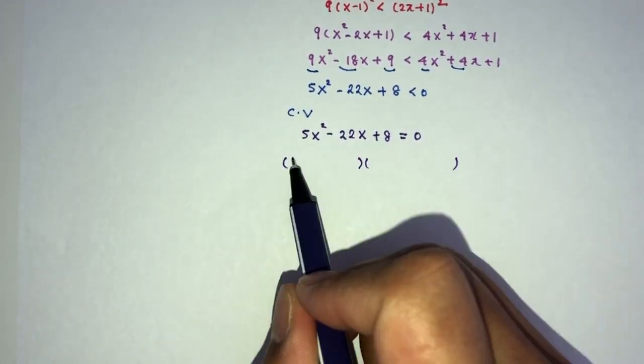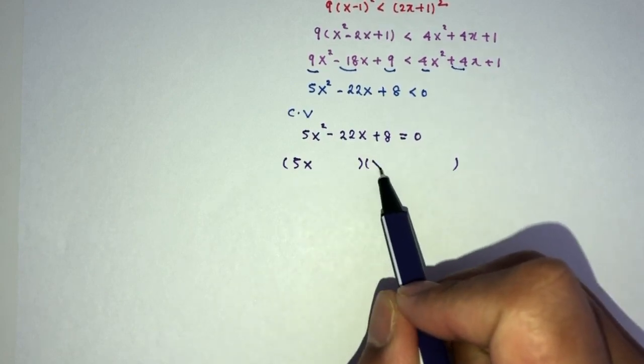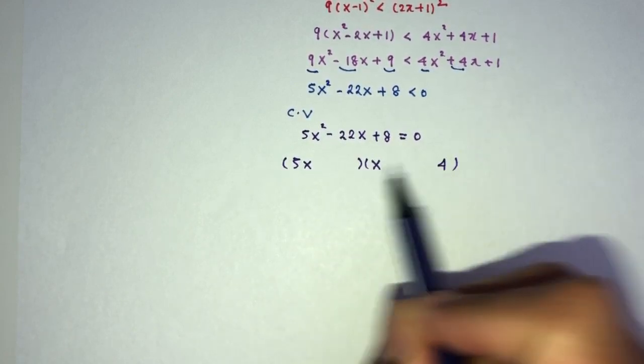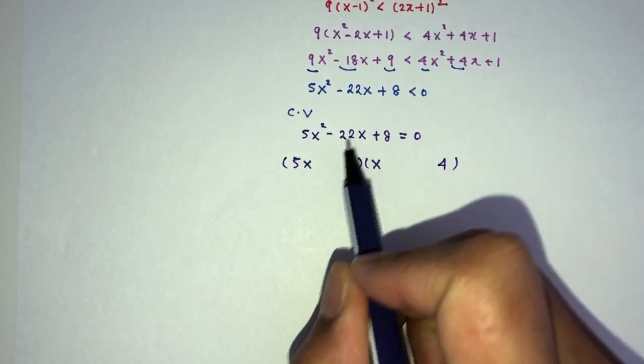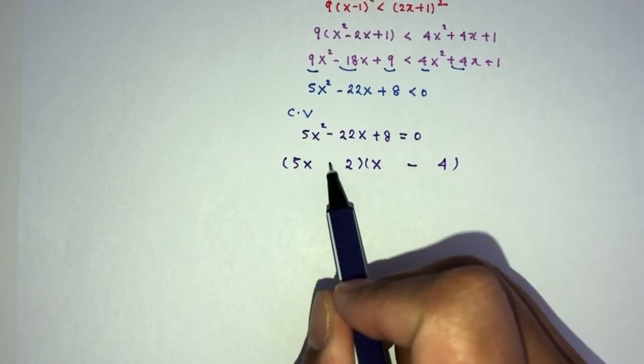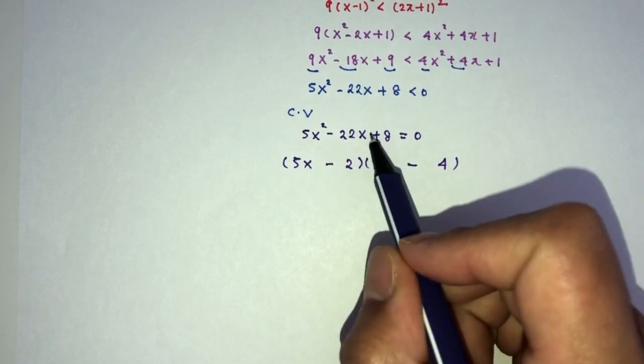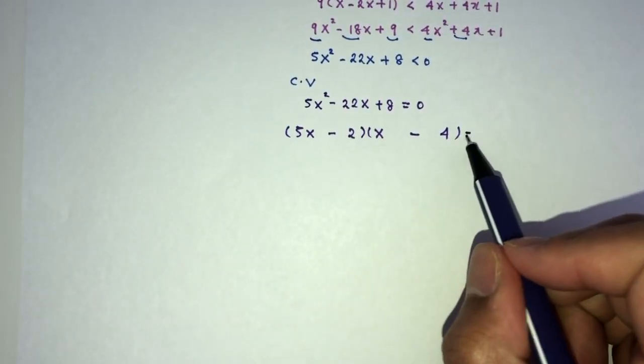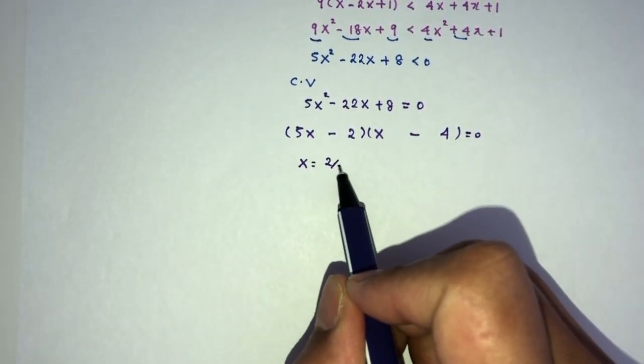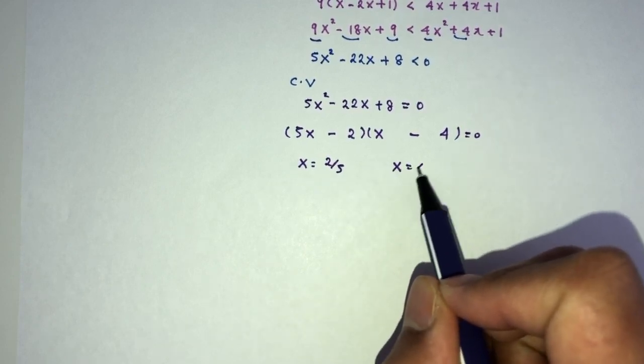Let's try to factorize. So we have 5x and x. 8 is 4 times 2. To get minus 22, we have to have minus 20 and minus 2. Minus times minus is plus, so we confirm it's plus here. It is good to go. Now, x will have to be the value of 2 over 5, and x will be the value of 4.